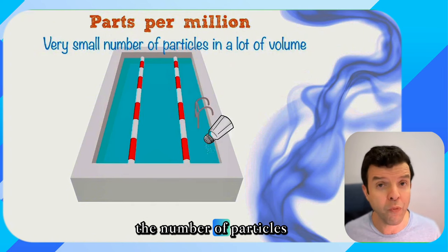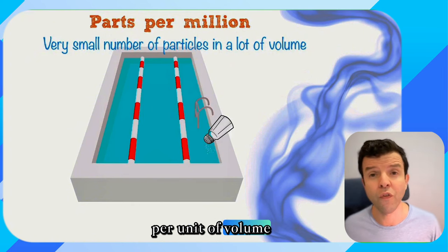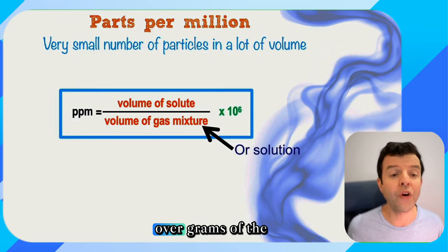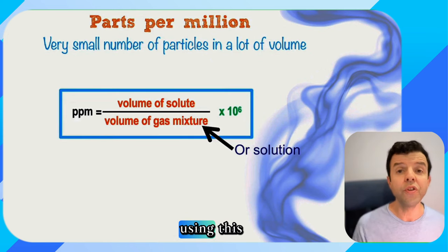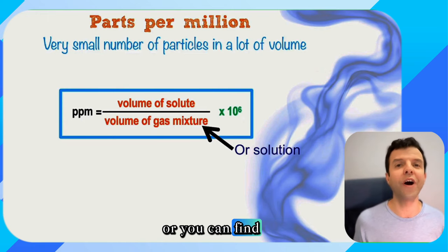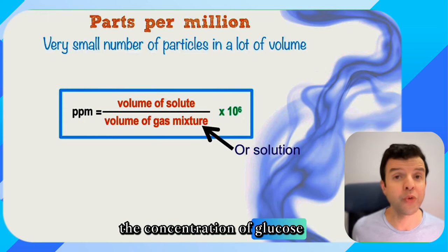Parts per million are the number of particles per unit of volume. We usually calculate it in terms of grams of the solutes over grams of the solvent. Using this formula you can find the concentration of pollutants or you can find the concentration of glucose in blood.